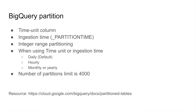In BigQuery, when you create a partition table, you can choose between a time unit column, ingestion time, or an integer range partitioning. When using a time unit or ingestion time, you can select between daily, hourly, monthly, or yearly.